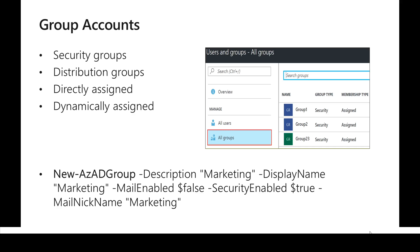There are two ways to assign users to groups: directly assigned and dynamically assigned. With directly assigned, after creating a group — say via Azure portal or using the cmdlet New-AzureADGroup — we go to the group and manually add all the users inside it.